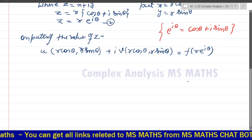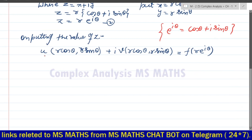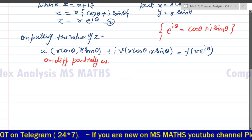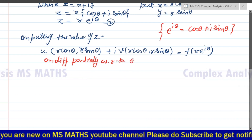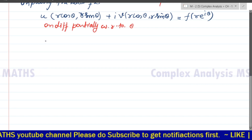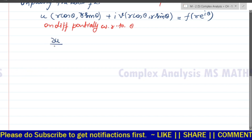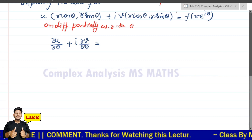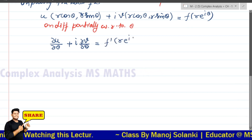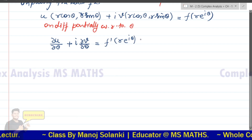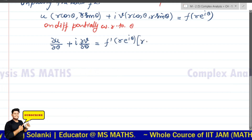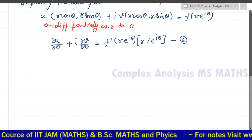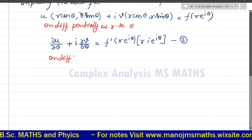On differentiating partially with respect to theta, we get del u upon del theta plus iota del v upon del theta. For the right-hand side, this becomes f-dash of (r e to the power iota theta), and the derivative of the inner term brings down iota, giving r iota e to the power iota theta. This is equation number 3.